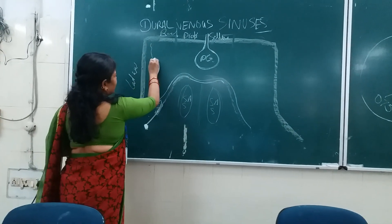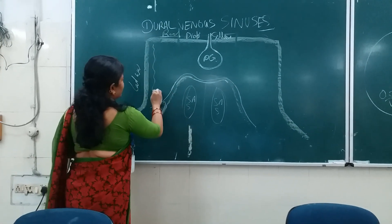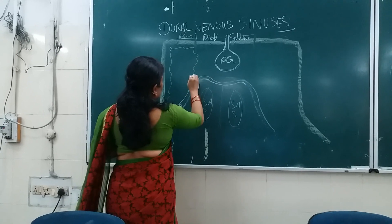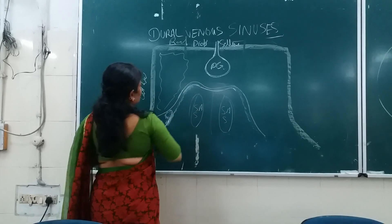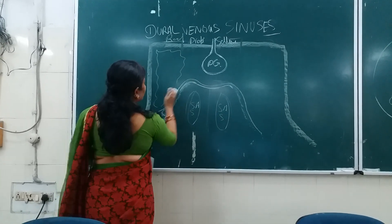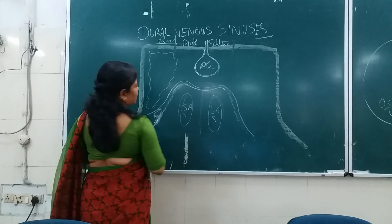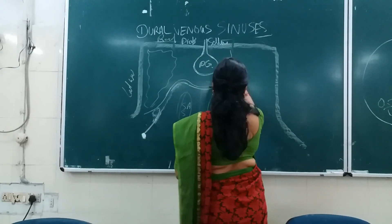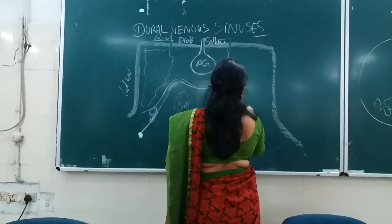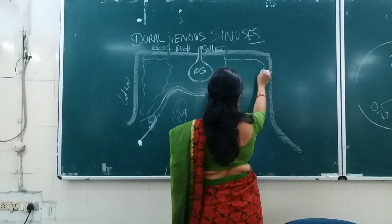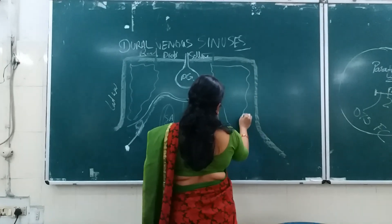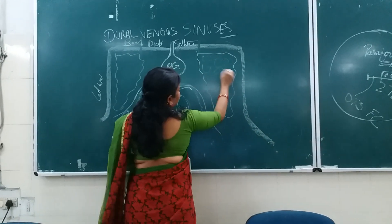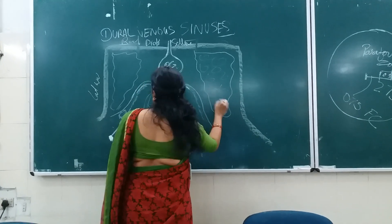The cavernous sinus is present in the endothelial light space. There are so many structures on either side. It has a cavernous, honeycomb appearance - that is why it is known as the cavernous sinus.